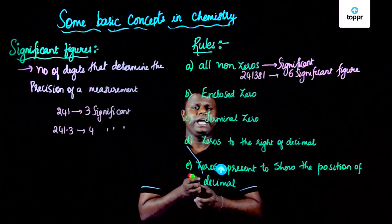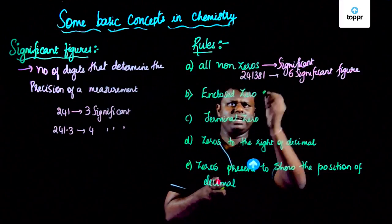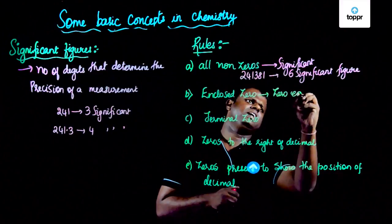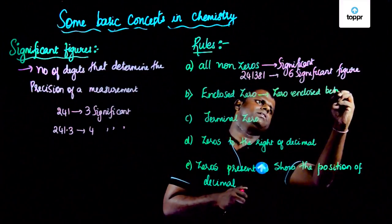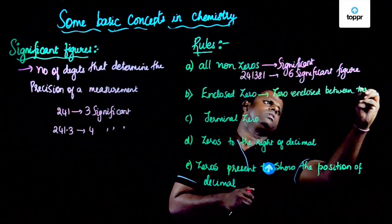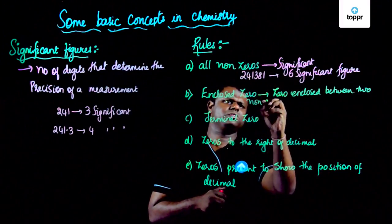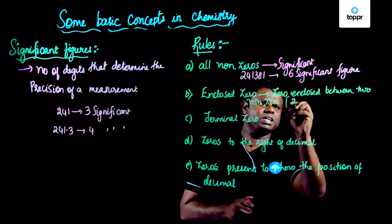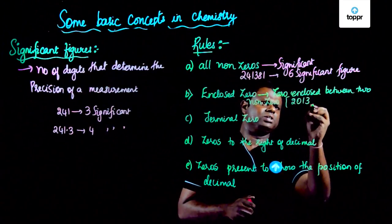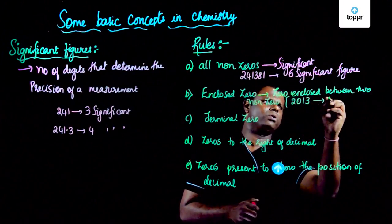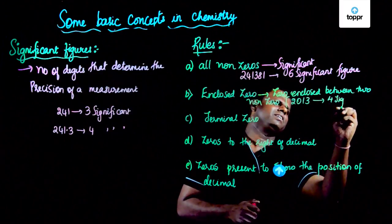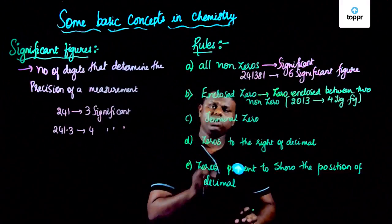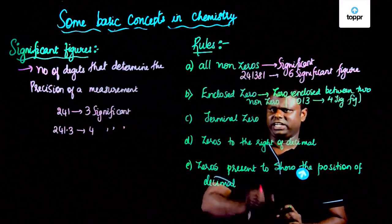Now let's talk about the enclosed zero. An enclosed zero means it is basically a zero enclosed between two non-zero digits. For example, if I have something like 2, 0, 1, 3 — this has 1, 2, 3, 4: four significant figures. So zeros enclosed between two non-zero digits are significant.